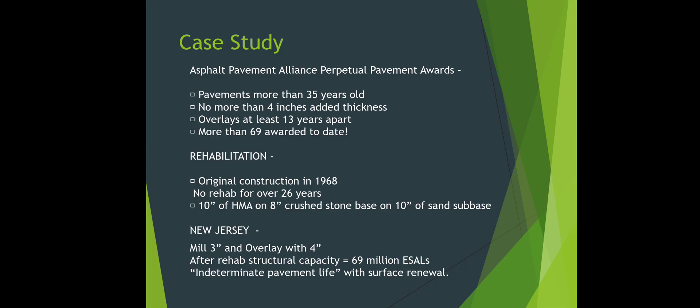Case study — Asphalt Pavement Alliance Perpetual Pavement Awards: pavements more than 35 years old, no more than 4 inches of added thickness, overlaid at least 30 years apart, with more than 69 awards to date. One example: original construction in 1968, no rehabilitation for over 26 years. New Jersey — milled 3 inches and overlaid 4 inches, with a structural capacity of 69 million ESALs, demonstrating intermediate pavement life with surface renewal.